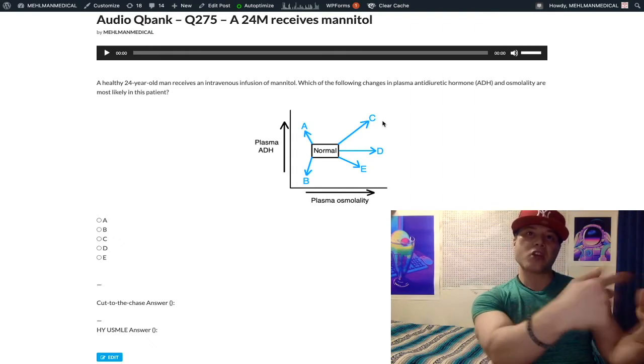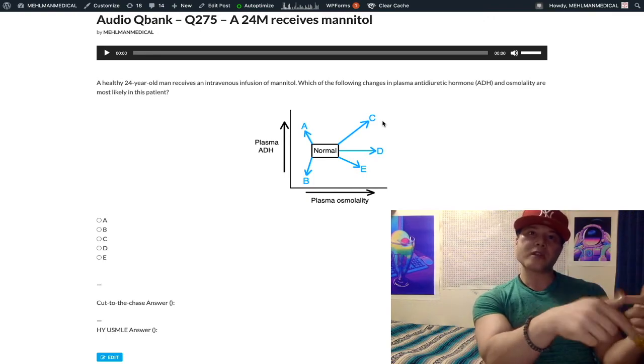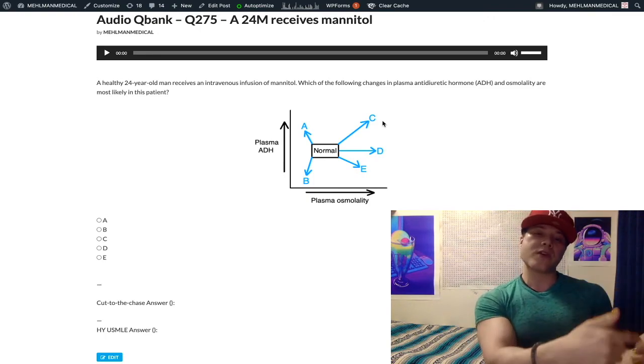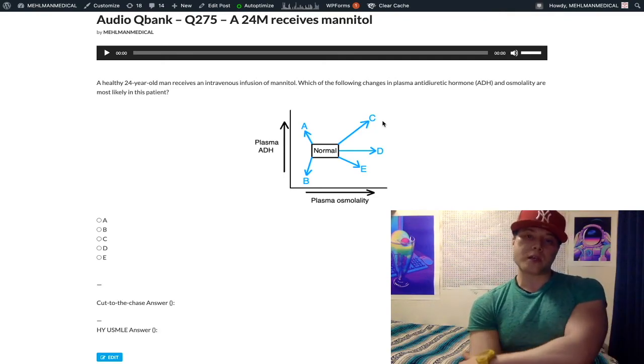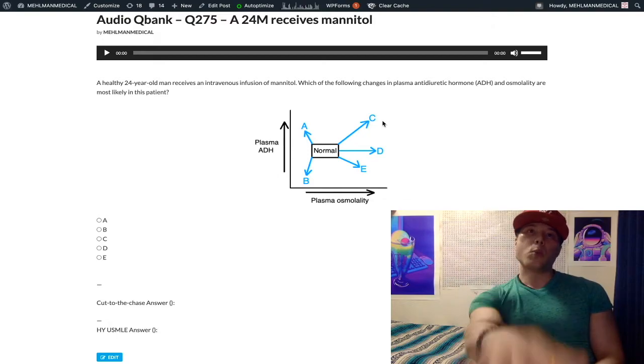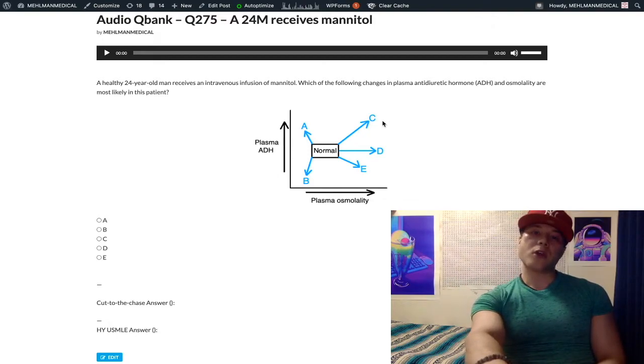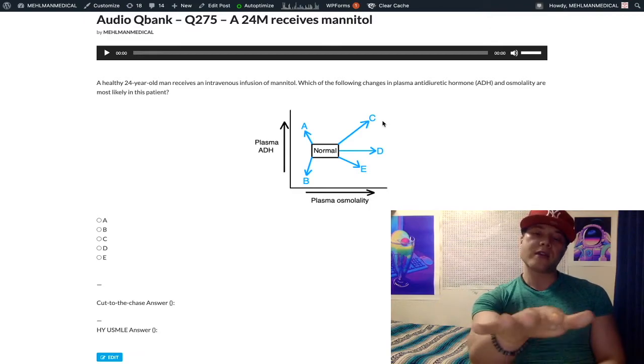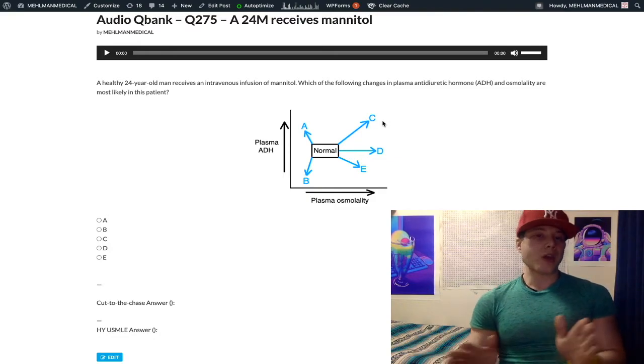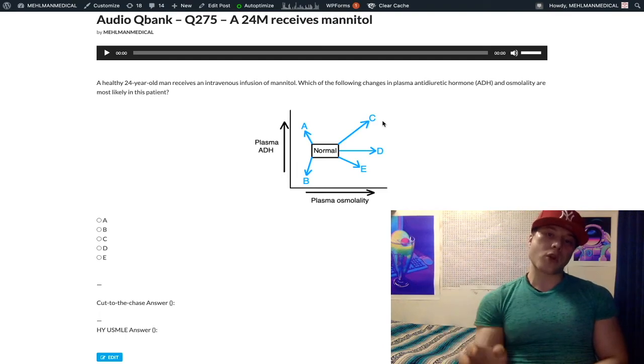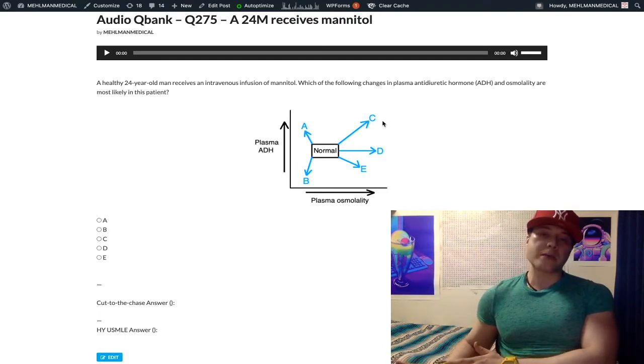And that's going to ultimately function to decrease plasma volume. So very acutely, mannitol increases osmolality, therefore increases plasma volume, but then it acts as an osmotic diuretic, ultimately decreasing plasma volume. So we don't want to give it in the setting of heart failure. Patients who are very sensitive to increase in preload can have exacerbation of heart failure if mannitol is given because of that acute increase in plasma volume. But then ultimately, the phase two component of mannitol is it decreases plasma volume, acting as an osmotic diuretic.